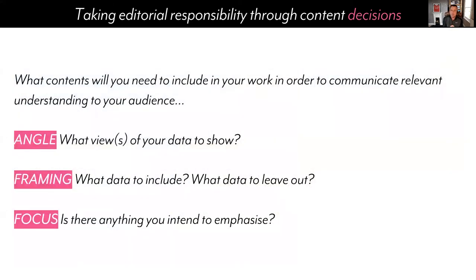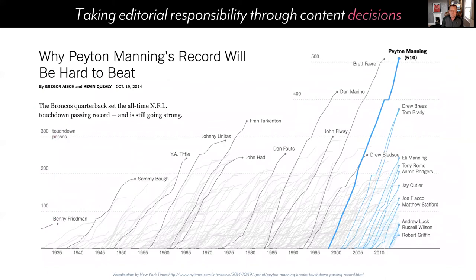There are three editorial perspectives we need to carefully consider before we select charts and design factors. We need to make decisions about these three aspects. We'll deconstruct a chart using these three perspectives — this is a chart from a few years ago about American football, celebrating the achievement of Peyton Manning, a quarterback who broke the record for the number of touchdown passes by a quarterback in the NFL.